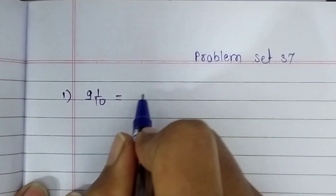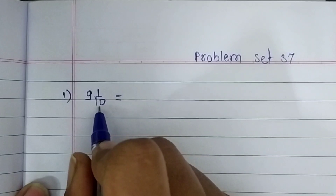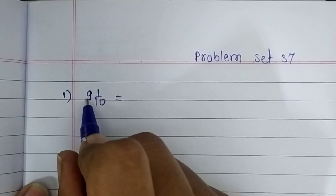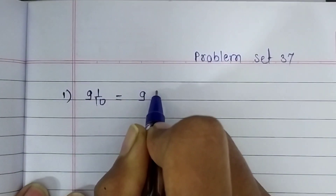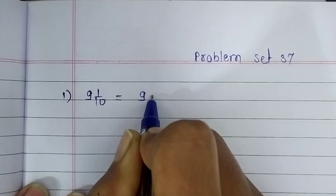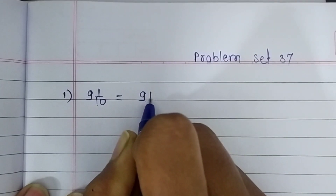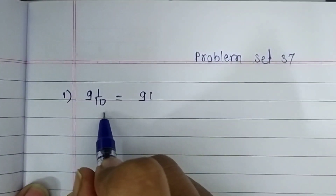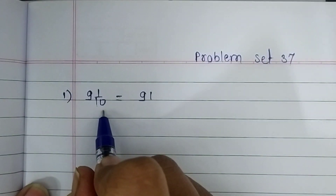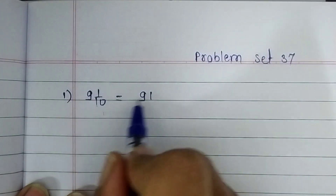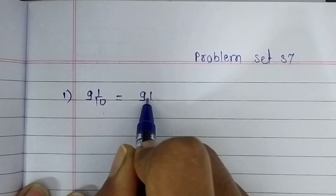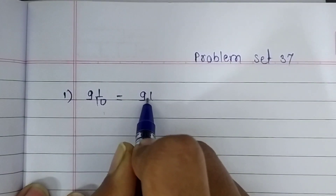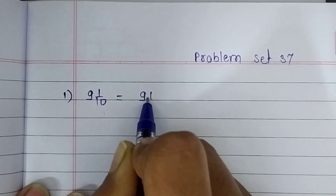Here we are going to ignore the denominator. 9 is our whole number and 1 is the numerator, the part of the fraction. Let's write it. Now look at the denominator — it has only one zero, so we are going to move one place from our right hand side.